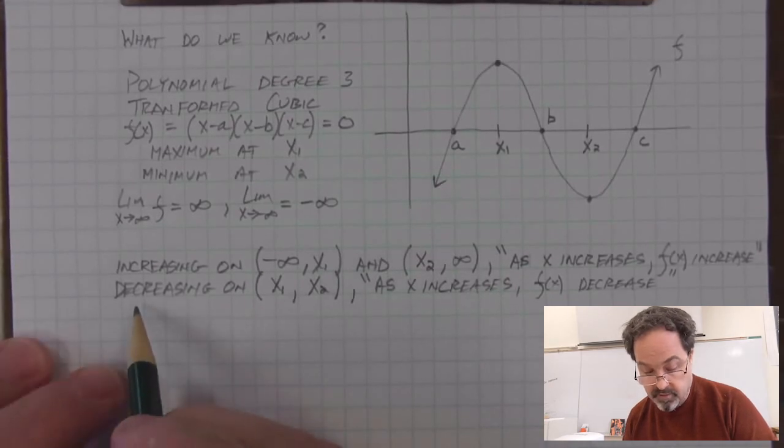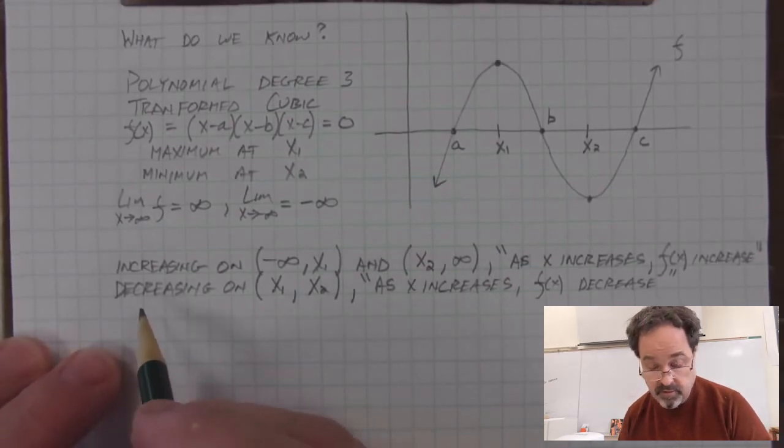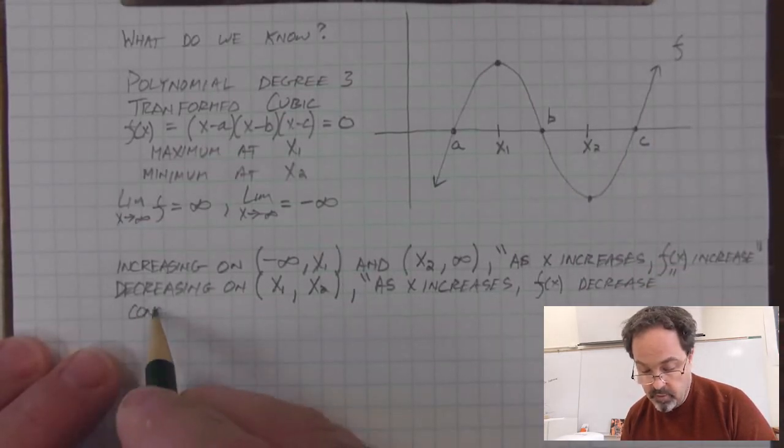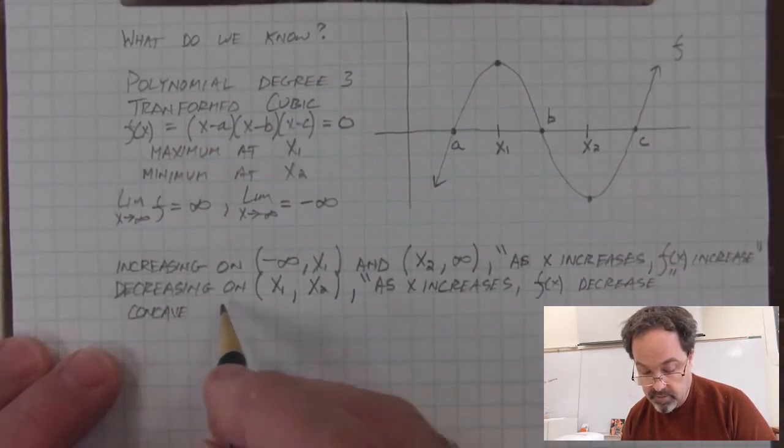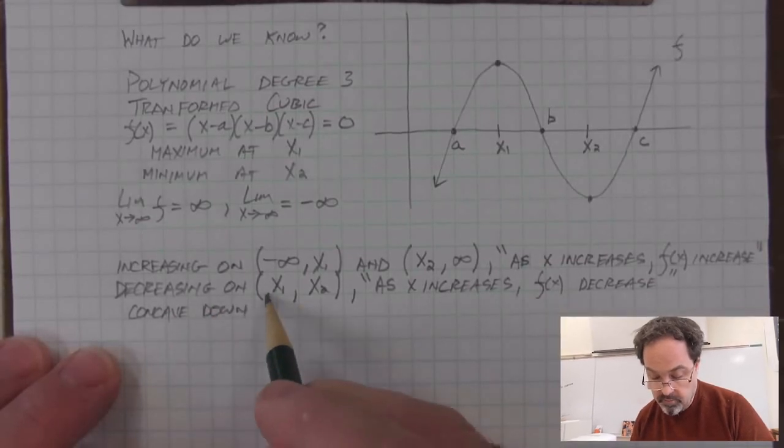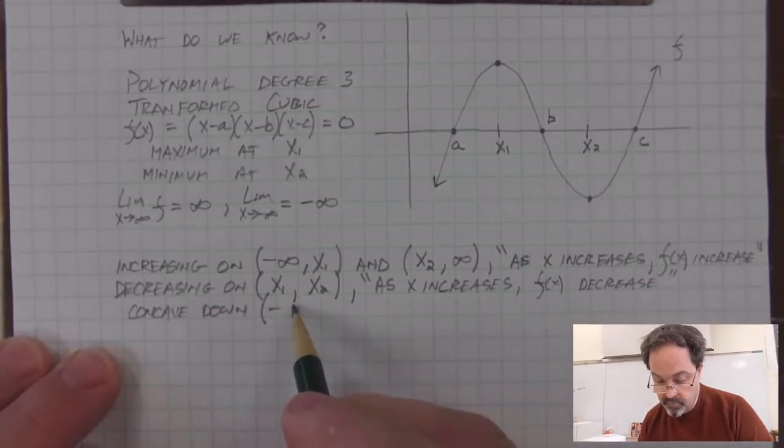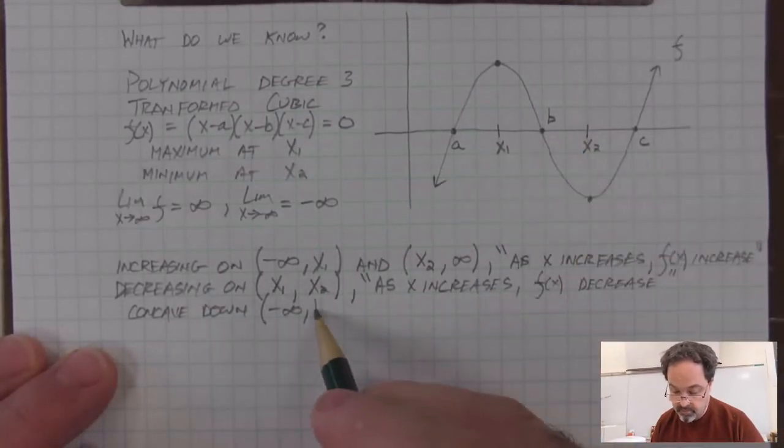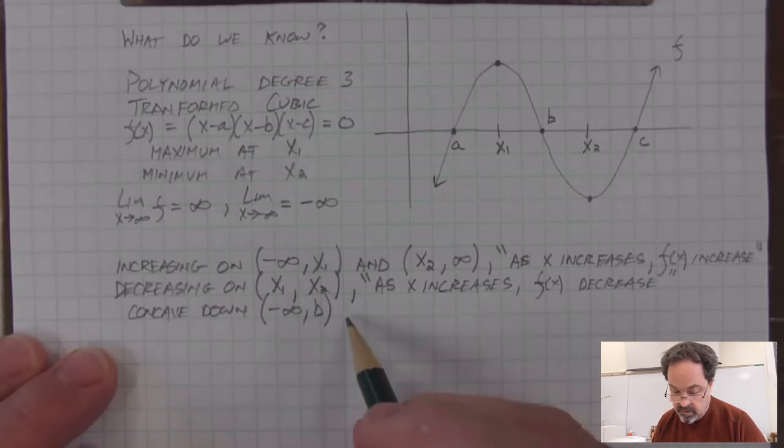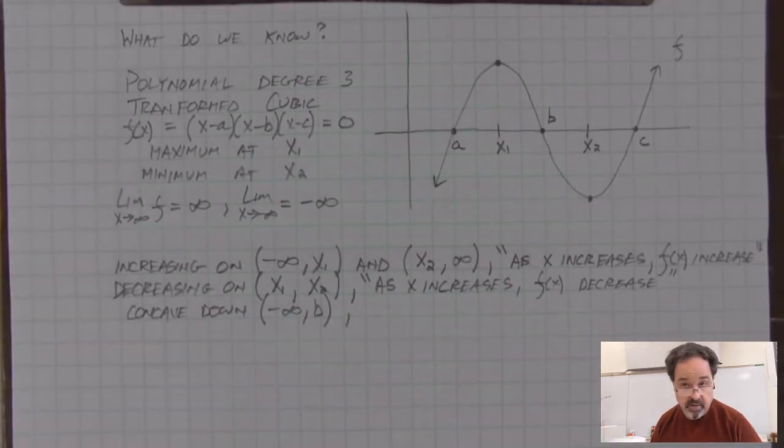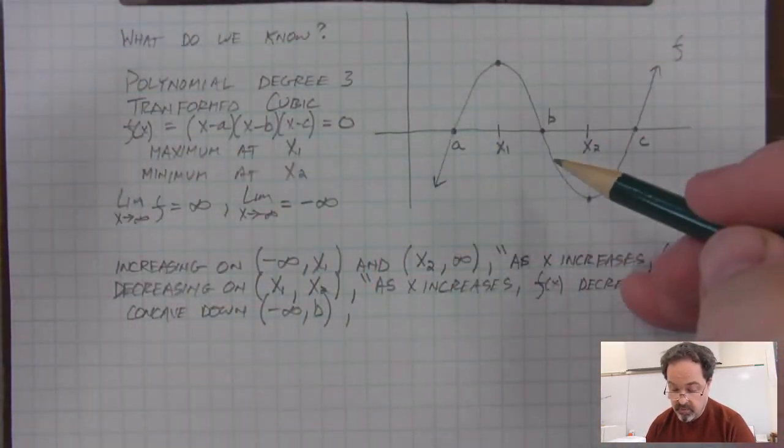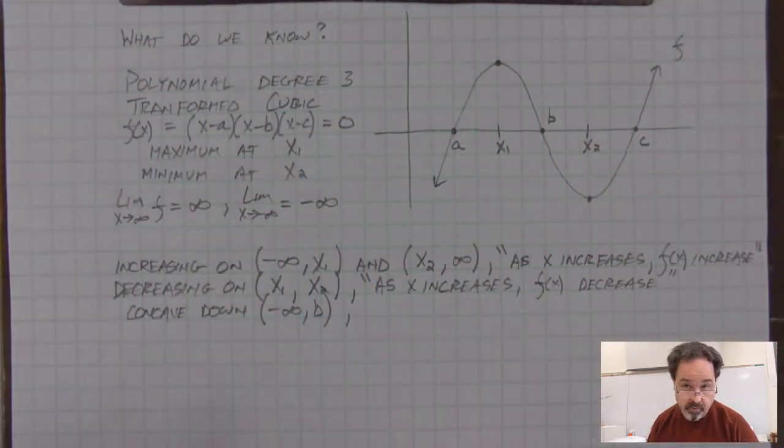Something else that can be said about this function is its concavity. Concave down and concave up. Concave down on an interval from negative infinity up until this point b. And what does it mean to be concave down? It has this shape. It's an open down, much like a parabola that has been reflected to open down.